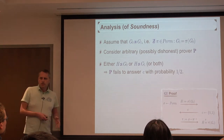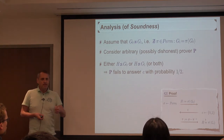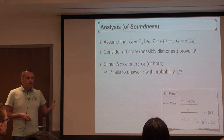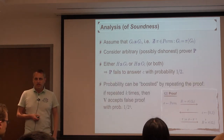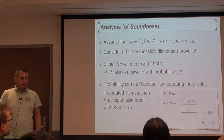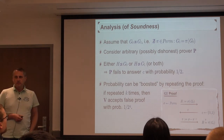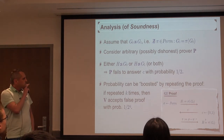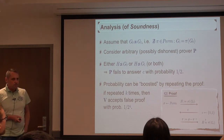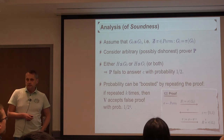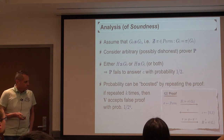What about security? If the two graphs are not isomorphic, no matter what the prover does — even if he's dishonest and tries to fool the verifier — he computes some graph H in the first move. If G0 and G1 are not isomorphic, then H is not isomorphic to at least one of them by transitivity. So with probability one-half, the prover has to provide a permutation mapping H to a graph to which it is not isomorphic, which is impossible. With probability one-half the verifier rejects. This error can be reduced to negligible by repeating the protocol in parallel.